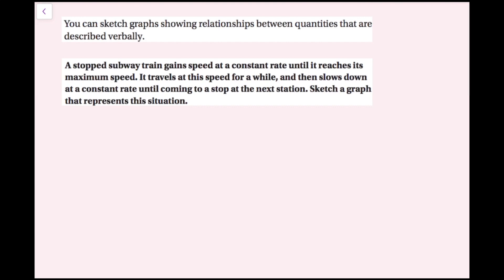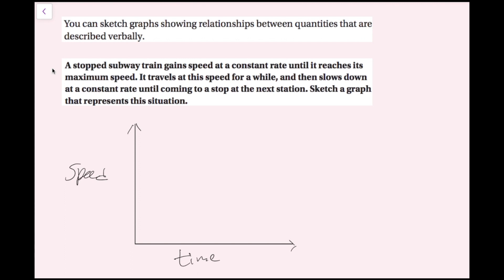I only need the first quadrant. I'll draw axes with speed on the vertical axis and time on the horizontal axis. We start with a stopped train, so the speed is zero — my first point is at the origin. Then speed increases at a constant rate until reaching maximum speed, so I draw a line segment going up. Then it says the speed stays at maximum for a while, so I draw another horizontal line segment at that level.